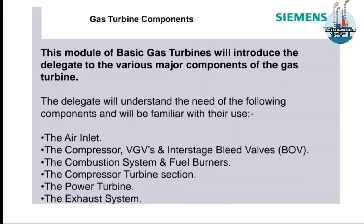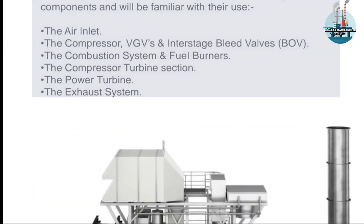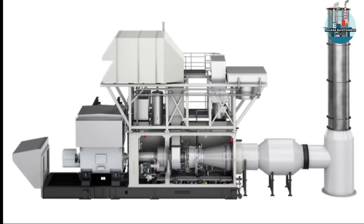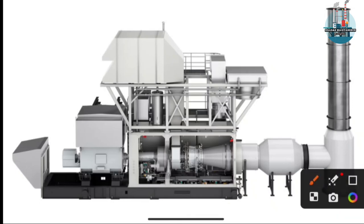Now we will look at the main components: the air inlet, the compressor with VGV — variable guide vanes. Let's look at the full package for the gas turbine. This is the Siemens SGT 300. We will download the package for this gas turbine. We can already see the cross-sectional view showing all the parts.